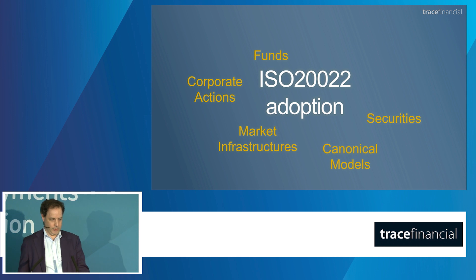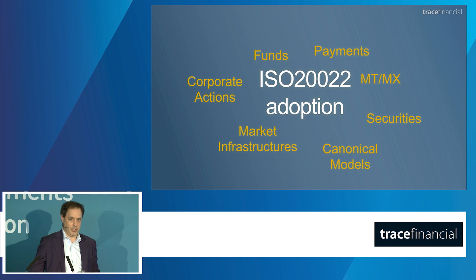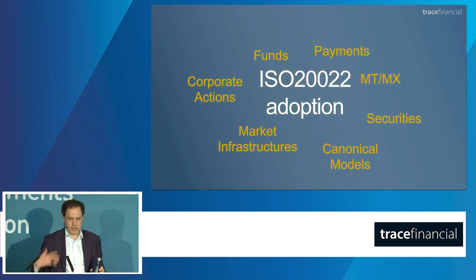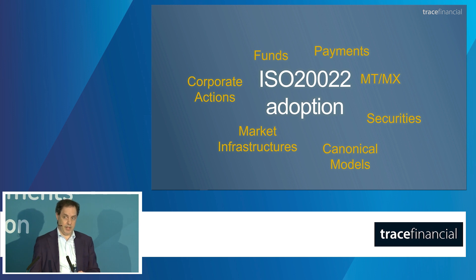So, ISO 20022 adoption — like it or not, it's coming. By 2025, SWIFT payments will be on 20022. By 2021, you can coexist sending MT and 20022 payments. If you're not interested in sending 20022 payments in 2021, fine. But you are expected to receive CAMP messages on the other side. That's the kicker. People think, well, I'm not sending — I'm just going to keep sending 101s and 103s. But the things that get spat out at the other end are CAMP messages. So you've got to be ready and prepared. This should be hair-on-fire time at the moment.